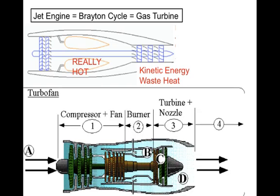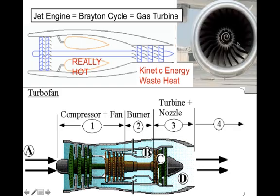For a true jet engine, this part here is where you're compressing the gas, but the shaft is connected to a turbofan in front, which pulls more air in and pushes it out. This also propels the jet forward. This turbofan is what you see when you look into a jet engine — don't get too close.